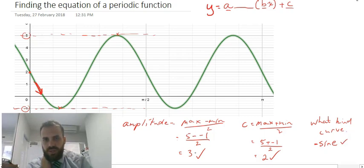So we know a is 3. Well, now we know that a is negative 3. Now we know the c value is 2. We know it's a sine curve. The last thing we really need to do is find the b value.